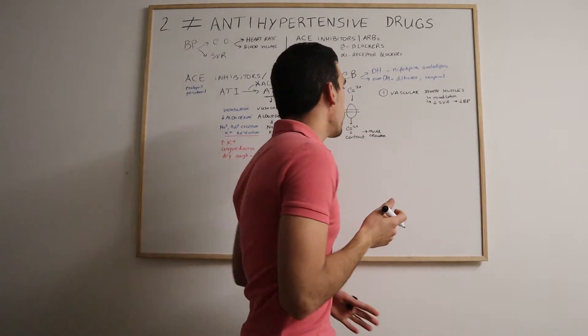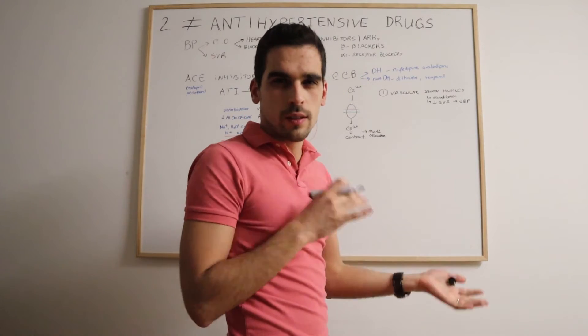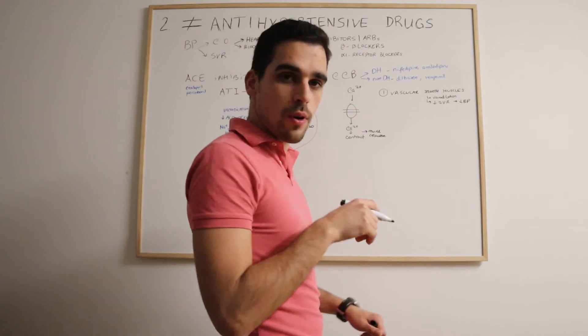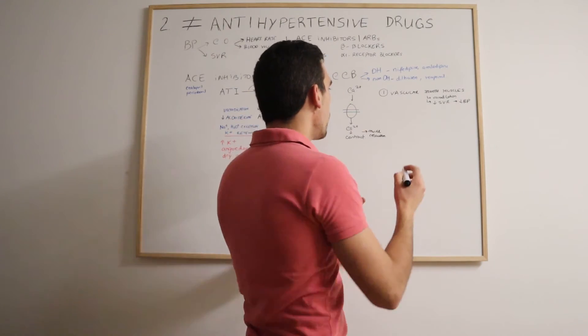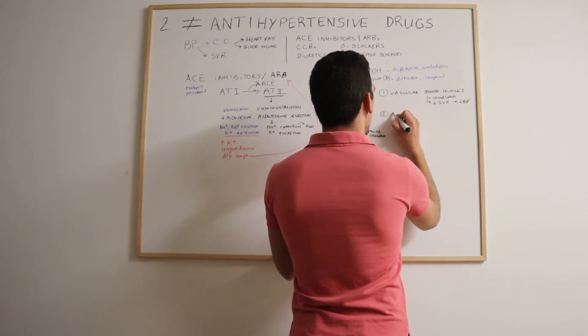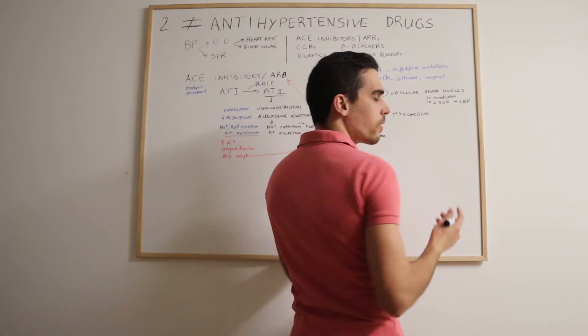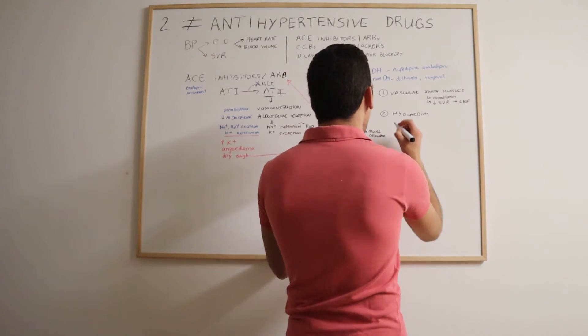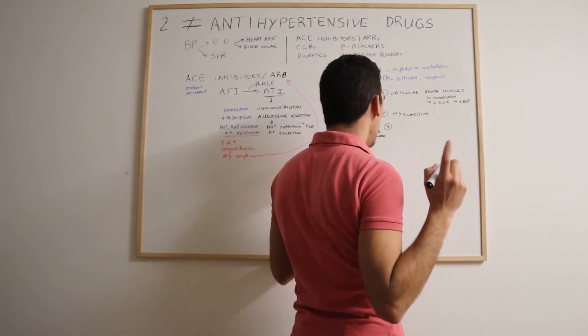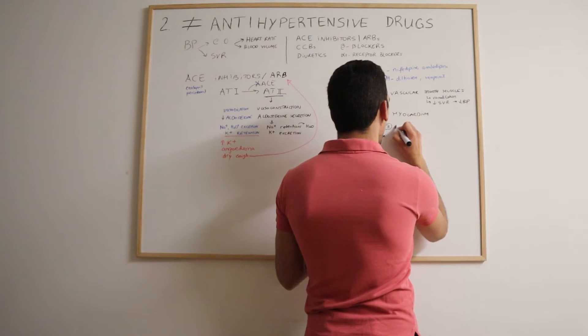Whilst the non-dihydropyridine calcium channel blockers, diltiazem and verapamil, they act more on a heart level. They can either act on the myocardium, on the coronary vasculature, or they can also act on the nodal conduction system.